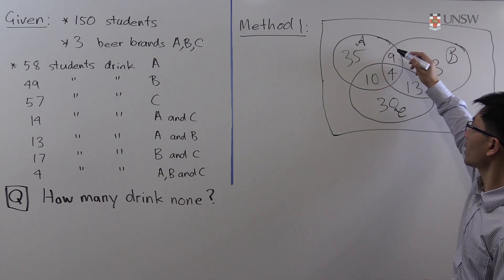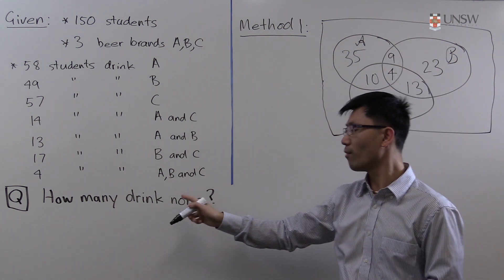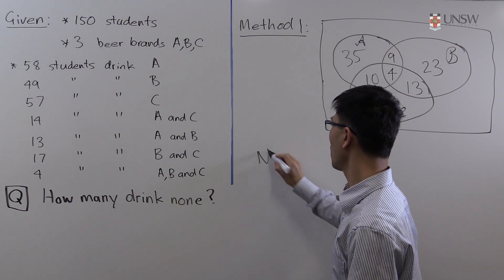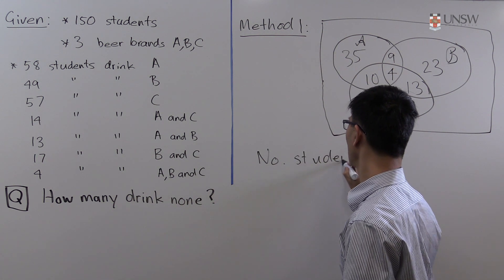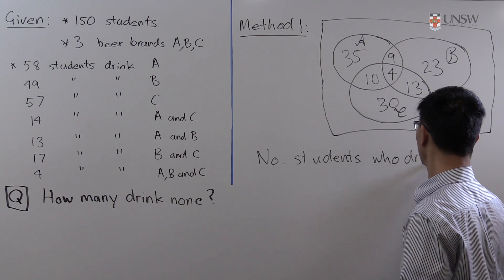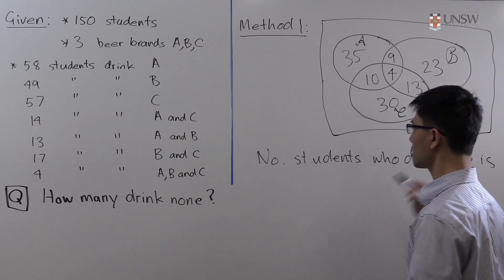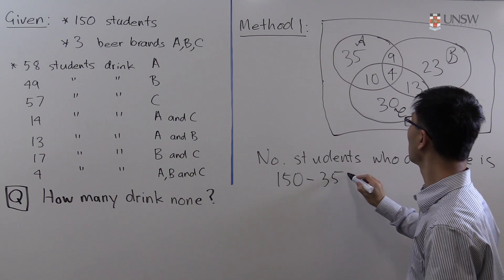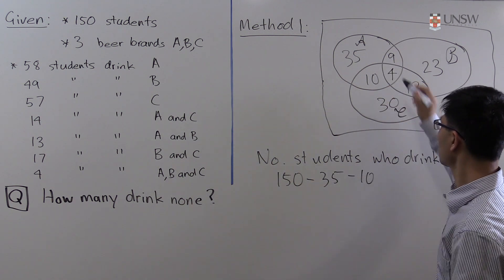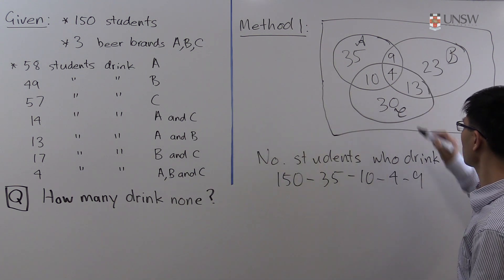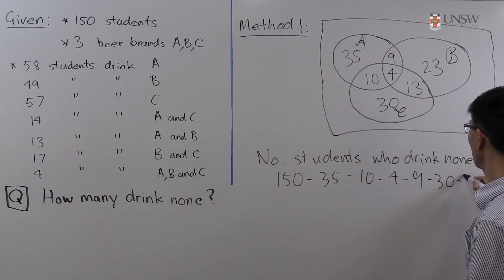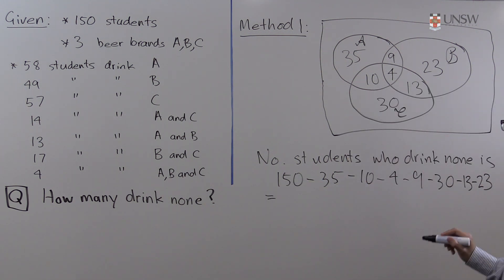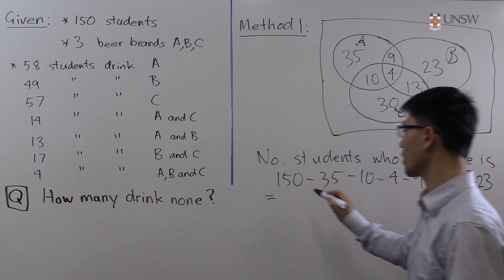We've now accounted for all students who drink at least one of the three beers. The number who drink none is 150 minus all the region values: 35, 10, 4, 9, 13, 23, and 13. Putting this in the calculator gives an answer of 26.